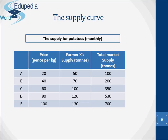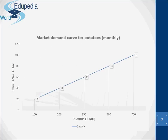The supply schedule can be represented graphically as a supply curve. A supply curve may be an individual firm's supply curve or a market curve — that is to say, that of the whole industry. This curve shows the market supply curve of potatoes. As with demand curves, price is plotted on the vertical axis and quantity on the horizontal axis. Each of the points from A to E corresponds to a figure in the last table. For example, a price rise from 60 per kg to 80 per kg will cause a movement along the supply curve from point C to point D, and total market supply will rise from 350,000 tons per month to 530,000 tons per month.